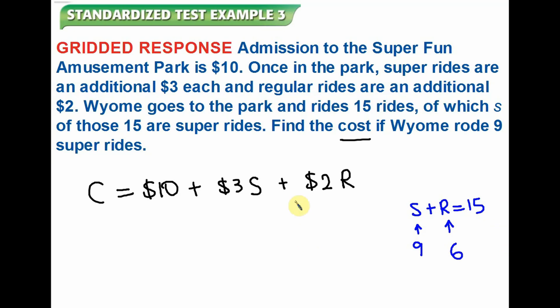If I want to find the total cost, I'm going to substitute 9 with the S and 6 with the R. In this case, I will get a total of $10 plus 3 times 9, I will get $27, plus 2 times 6, I will get $12. The total in here will be 10 plus 27 is 37, plus 12, I will get $49. And that's my total cost.